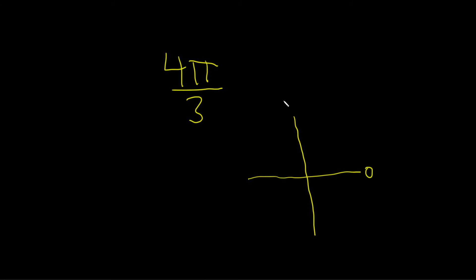So this is 0, this is π over 2, this is π, and then 3π over 2 is down here.